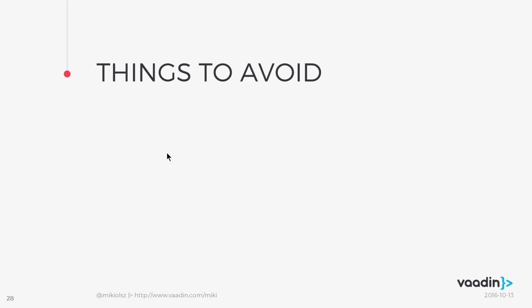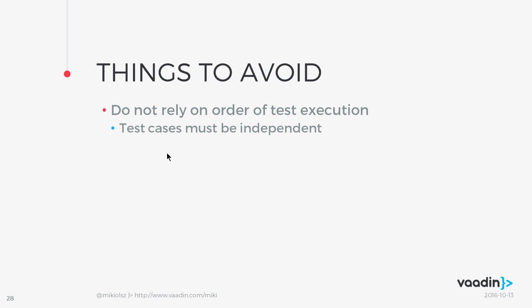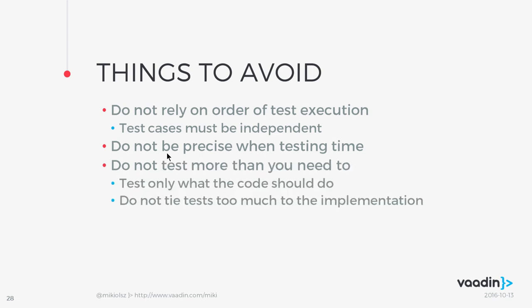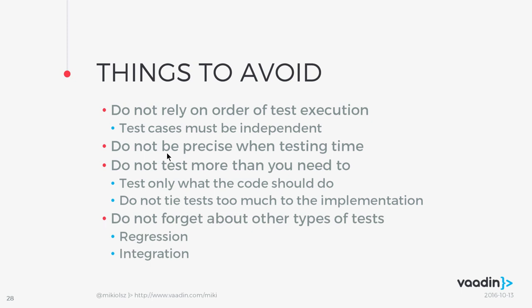Things to avoid when testing: do not rely on the order of test execution — test cases must be independent from one another. Do not be precise when testing time. And very importantly, don't test more than you really need to — test what the code should do and nothing more. Do not assume things based on how you know the implementation works, since tests should be independent from implementation. And don't forget other types of tests — regression tests to ensure your application behaves as previously, and integration tests to verify all elements work together properly.